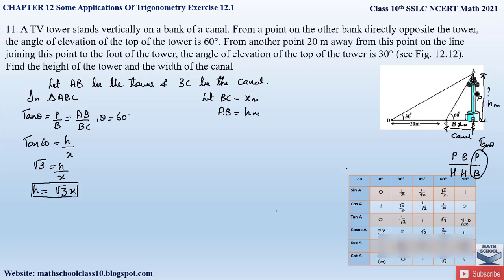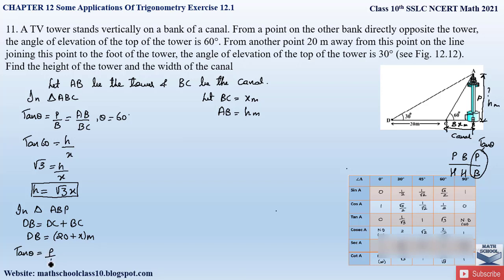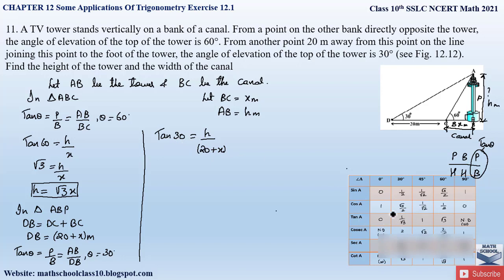Now let us consider triangle ABD and apply the tan trigonometric ratio. In triangle ABD, the base DB = DC + BC = 20 + x meters, and the perpendicular AB = h meters. Applying tan θ = perpendicular / base where θ = 30°, we get tan 30° = AB / DB, so tan 30° = h / (20 + x).